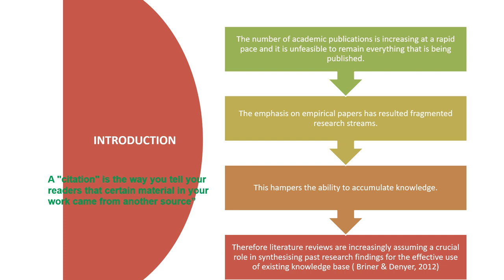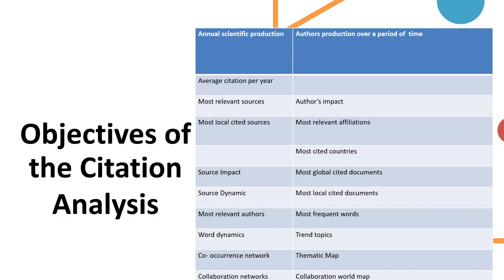Therefore, literature reviews are increasingly assuming a crucial role in synthesizing past research findings for the effective use of the existing knowledge base. Some areas are over-researched but people are still doing research on the same areas. What will be the outcome of such over-research? Researchers are not able to conclude their research and fragmented knowledge would be the result. So the research should be focused, and citation analysis will be fruitful for getting a conclusion on researchers in a particular area.